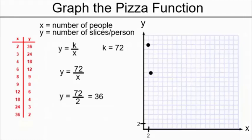Therefore, three people getting 24 slices each goes here, and the rest of our points go on one by one. Four people get 18 slices each. Six people get 12 slices each. Eight people get nine slices each.